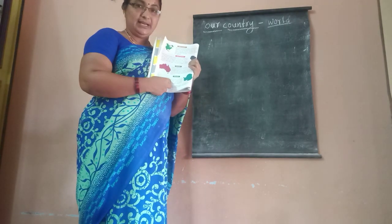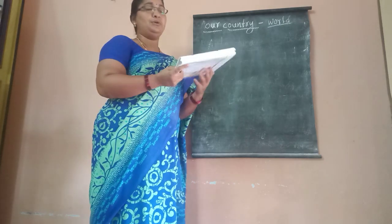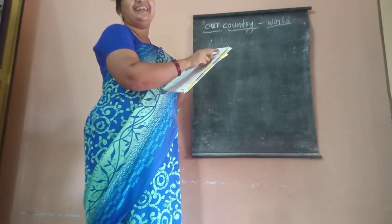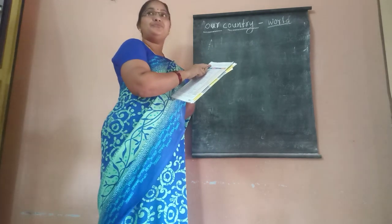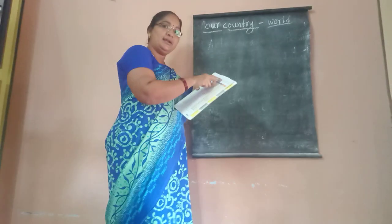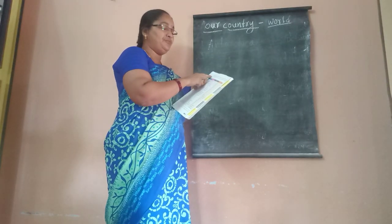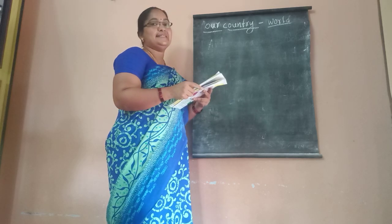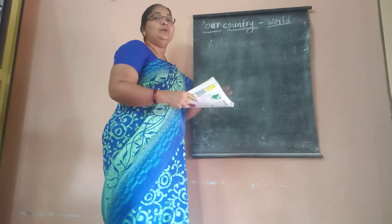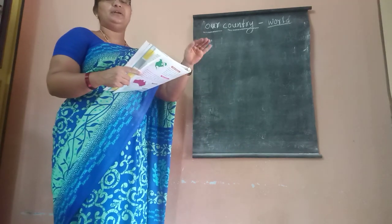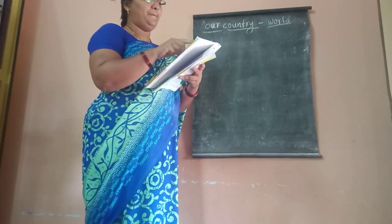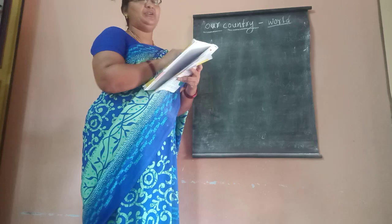Actually there are 7 continents, but in Antarctica there are no people. So in the remaining 6 continents there are 200 countries and 740 crore people. Every country has its own capital and currency. Let us know about some of the important countries located in different continents.